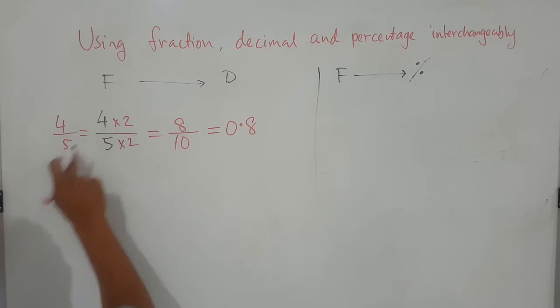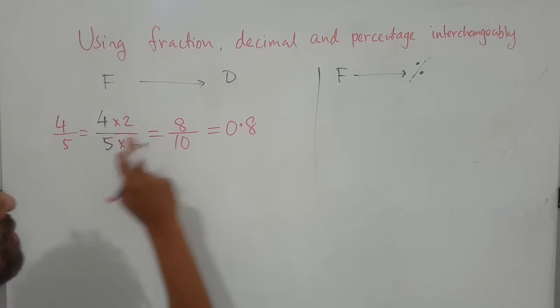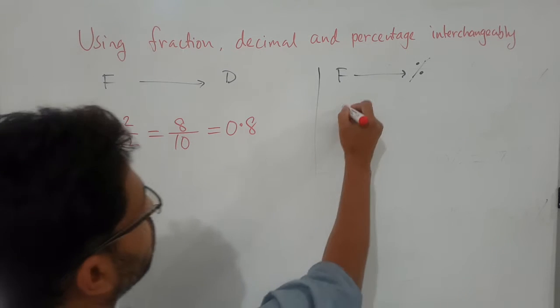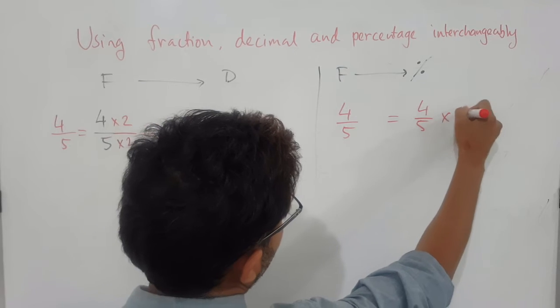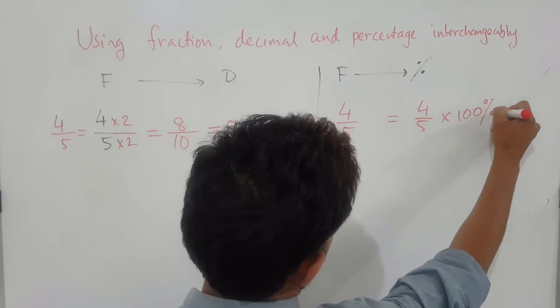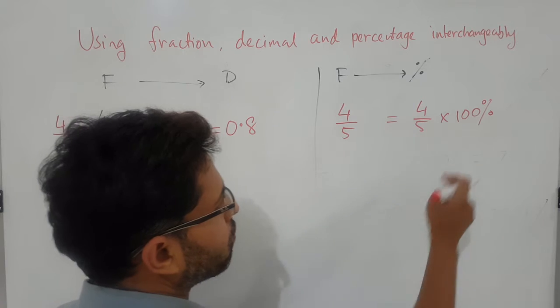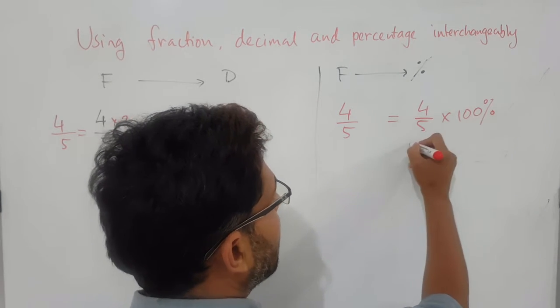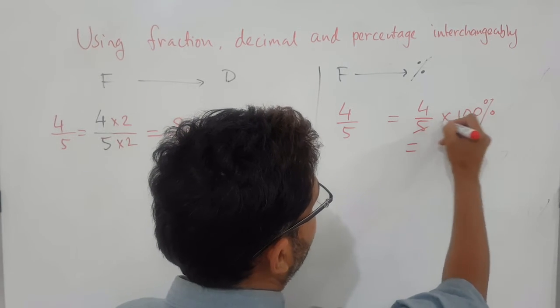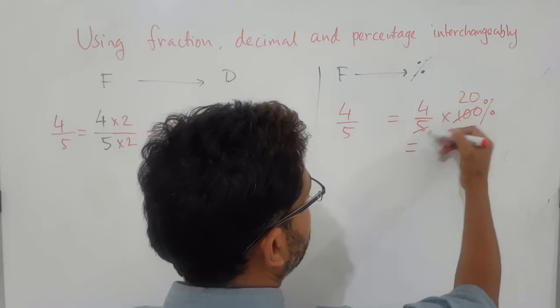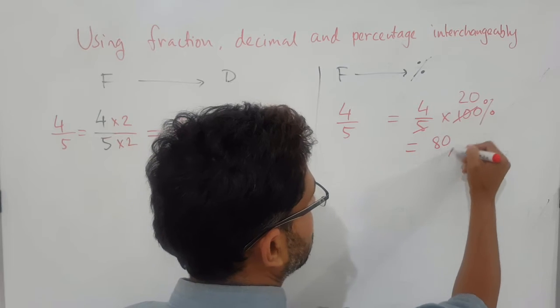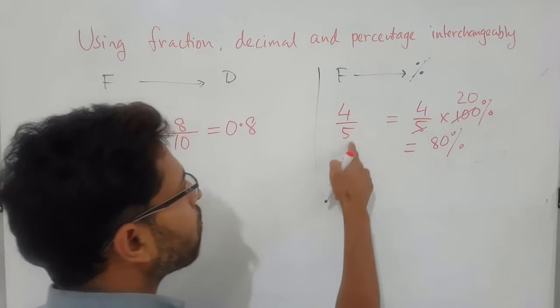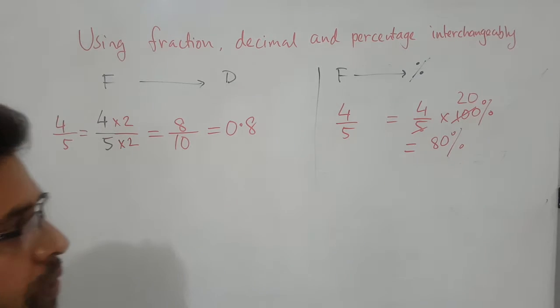Before going to the next one, can we express 4 over 5 in terms of percentage? So again, 4 over 5 is equivalent to 4 over 5 times 100 percent. As I said, I am multiplying without changing the value by putting 100 percent. And now we just simplify it. So 5 goes into 100, which is 20, 5 times 20 is 100. So 4 times 20 is 80 percent. So it means 4 over 5 is equal to 80 percent.